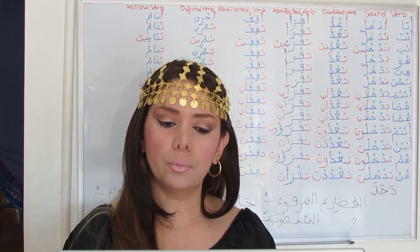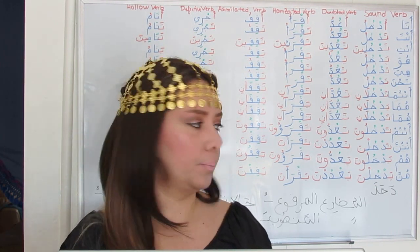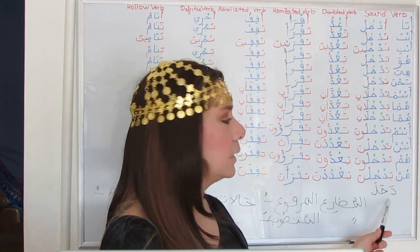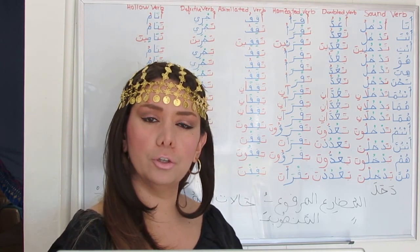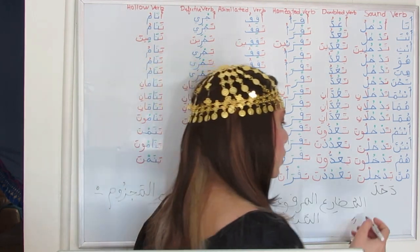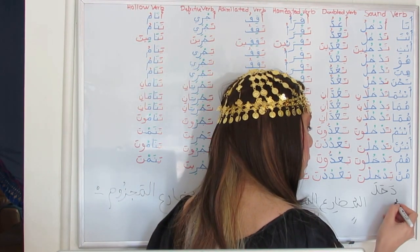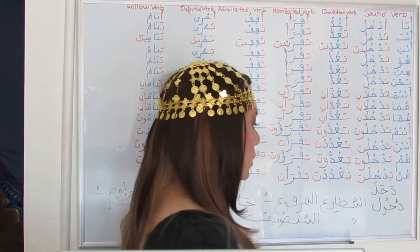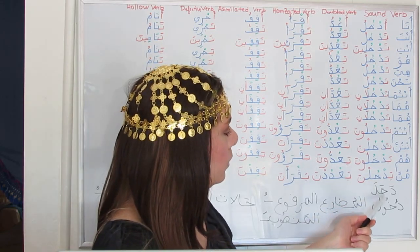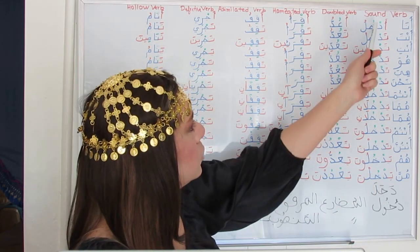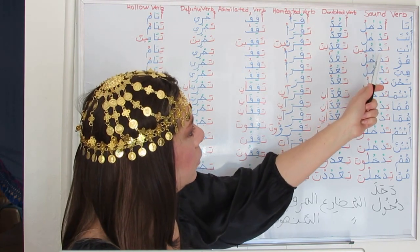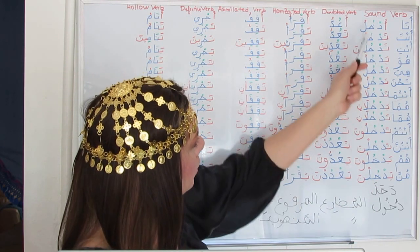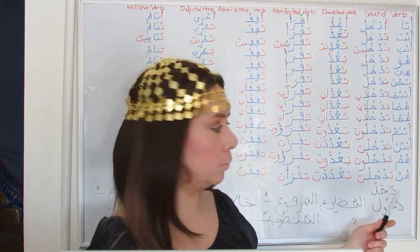Every verb has a stem. For example, the verb 'dakhala' means 'to enter,' and the verbal noun of dakhala is 'duhul,' meaning 'entrance.' You will see the stem — marked in blue — in each verb conjugated with a different pronoun.